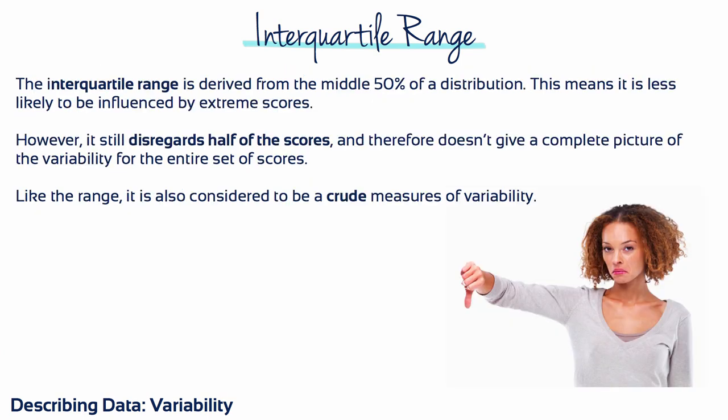Because the interquartile range is derived from the middle 50% of a distribution, it is less likely to be influenced by extreme scores and therefore gives a better and more stable measure of variability than the range. However, the interquartile range only considers the middle 50% of the scores and completely disregards the other 50%. Therefore, it does not give a complete picture of the variability for the entire set of scores. Like the range, the interquartile range is considered to be a crude measure of variability.